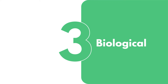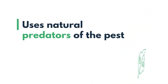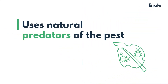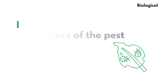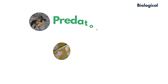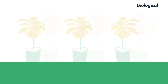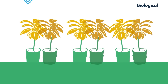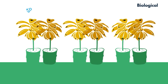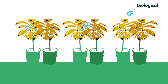3. Biological Control: Controlling diseases or pests using other organisms that are natural enemies of the pest — predators, pathogens, or parasites. For example, using beneficial fungi to combat pathogens.